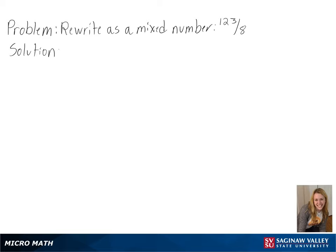Our problem is to rewrite the fraction as a mixed number: 123 over 8. Since our numerator is bigger than the denominator, we can use long division to solve this.